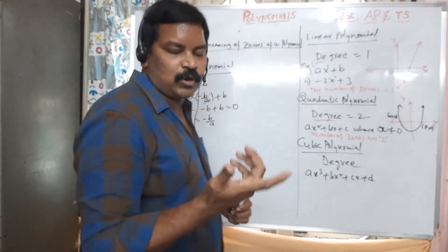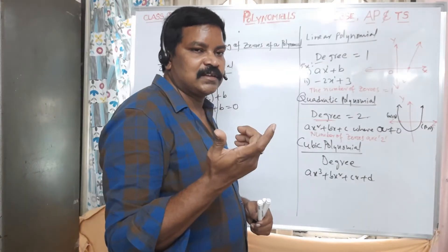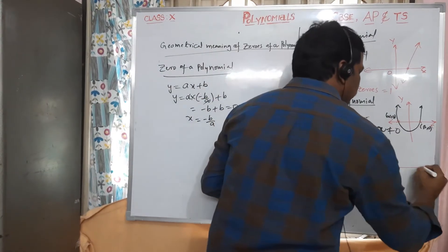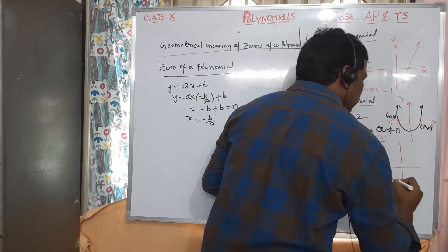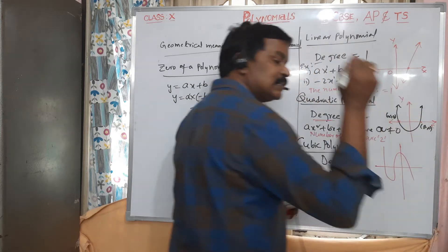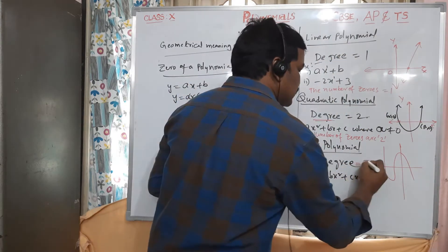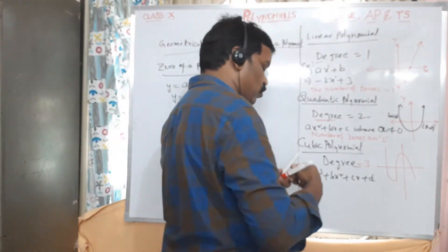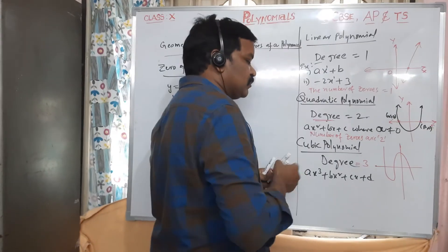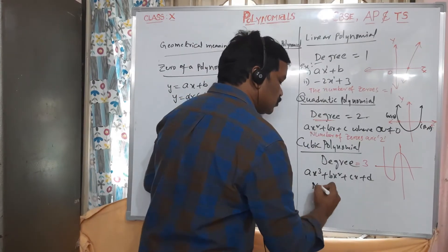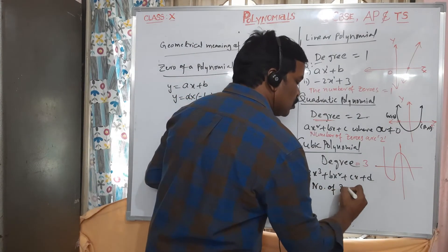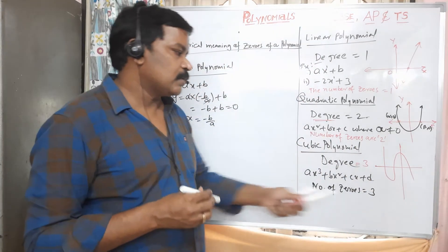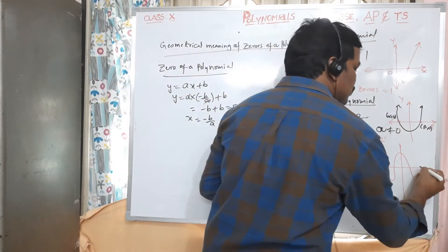For a cubic polynomial, the graph intersects the x-axis at three points since the degree is 3. Therefore, the number of zeros of a cubic polynomial is three.